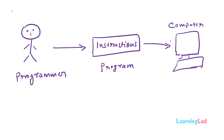The computers that we have contain a lot of programs. Some programs manage the computer hardware resources and they are called system programs. And some programs provide specific functionality to a user — for example, notepad, web browser, music player, video player — and these are called application programs.